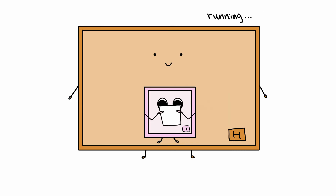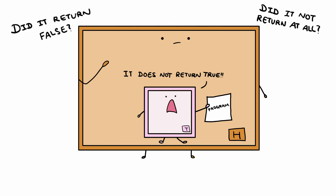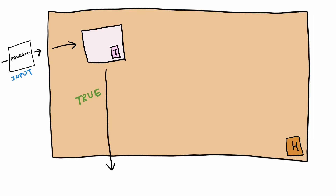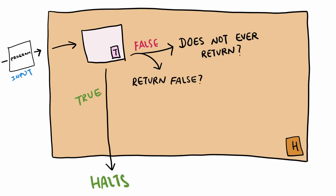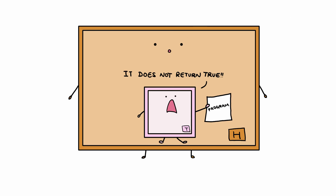However, if T determines that the program does not return true, then the program either returned false, or it may have just never stopped running. But to properly define H and show the reduction, we need a clear description for when H returns false. So to do that, we may have to get a little creative.